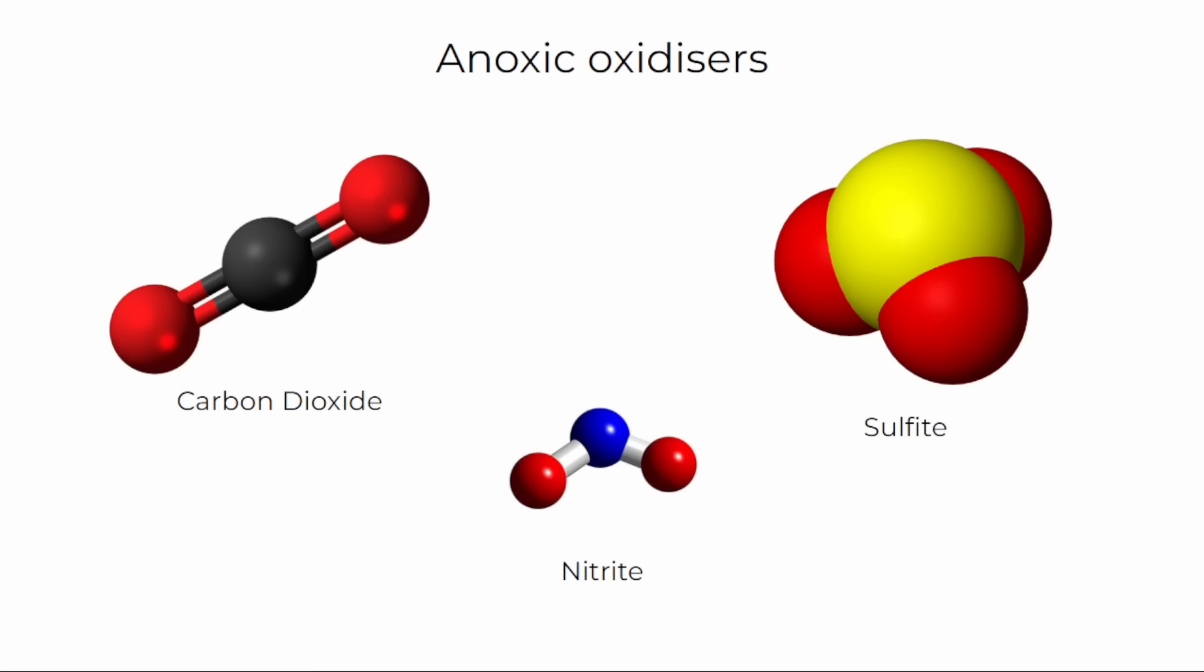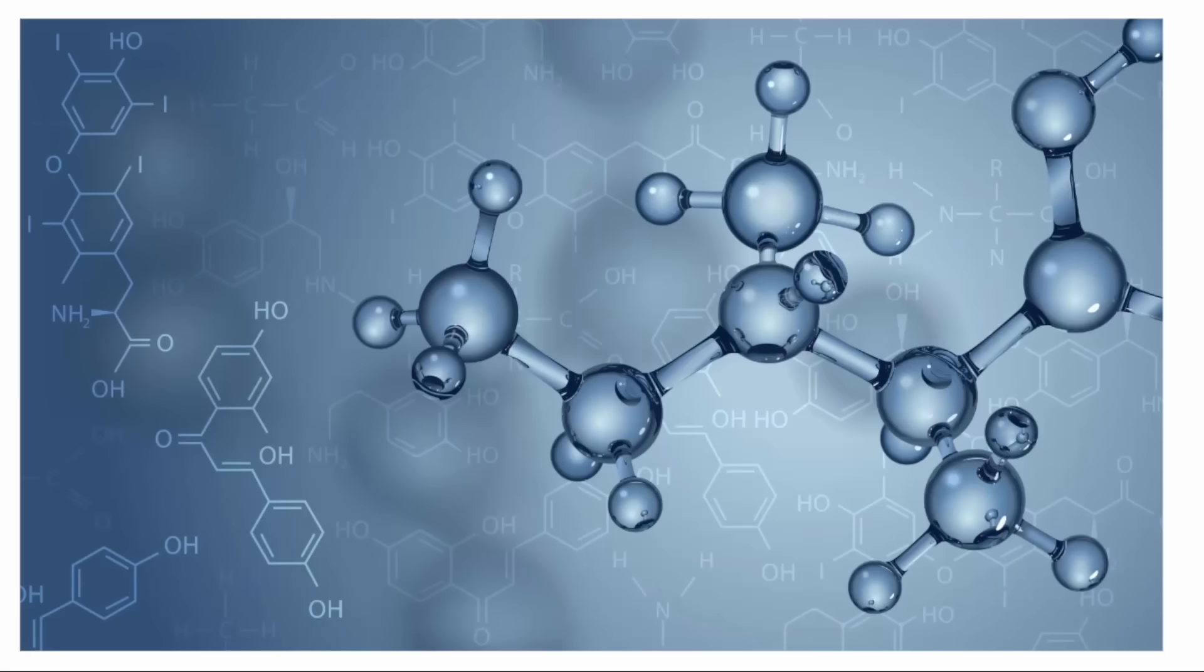In environments without oxygen, things can get more diverse. Some examples of oxidizing agents include sulfite, carbon dioxide, and nitrite. With some chemistry knowledge, you could very easily create your own custom metabolisms for your alien microbes. Unfortunately, that's out of the scope of this video, so for those of you like me, lacking chemistry knowledge, here are a few interesting anoxic metabolisms on Earth.